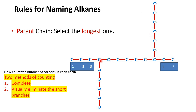So only this chain is left, and this is our parent chain. Now count the number of carbons in this longest chain: 1, 2, 3, 4, 5, 6, 7, 8, 9, 10, 11, 12, 13, 14, 15, 16, 17, and 18. Hence our parent chain name will be octadecane. The rest of the carbons are considered substituent branches — we have 2 branches attached: one with 2 carbons and another with 3 carbons.